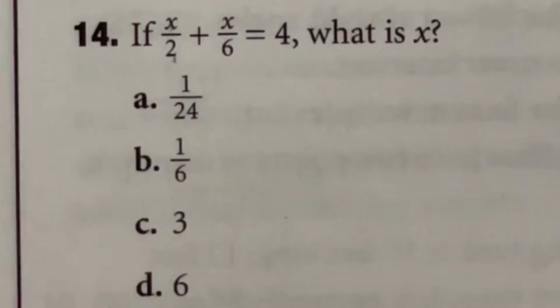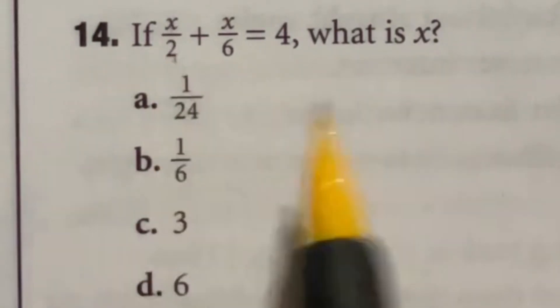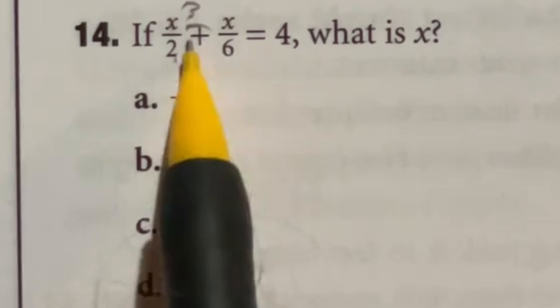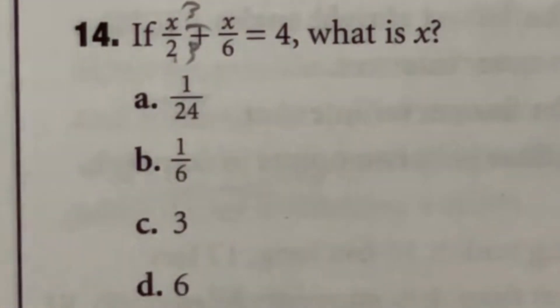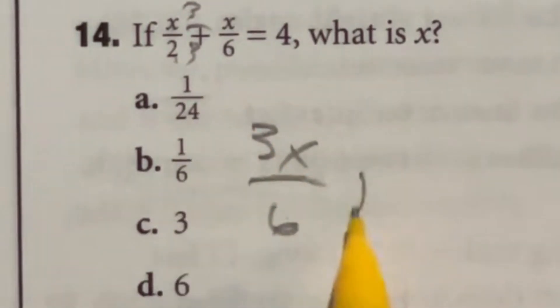Why guess and check when you can do it with the math? So here's what I'm going to do here. I'm going to multiply this first guy here by a clever form of 1 in the idea of 3 over 3. Why am I going to do that? Because I want this bottom number to be 6. So x times 3 on the top is going to give me 3x over 6. And then we still have that plus x over 6 equals 4.